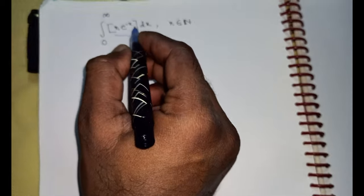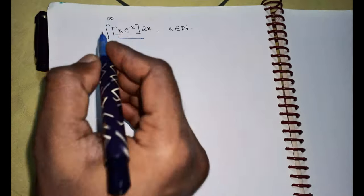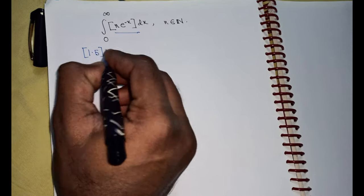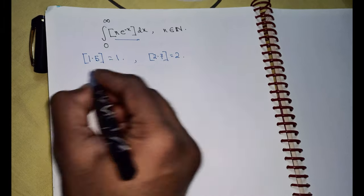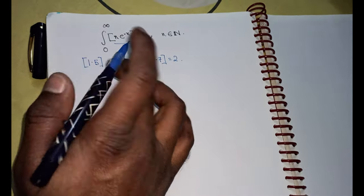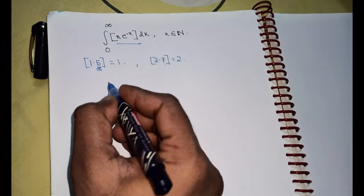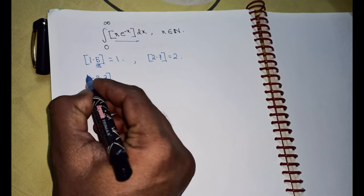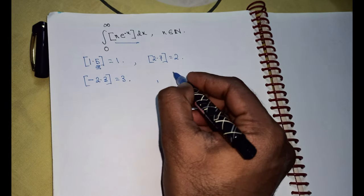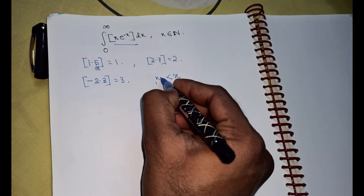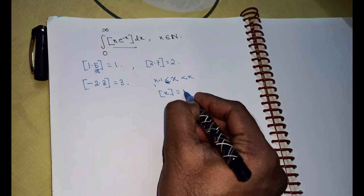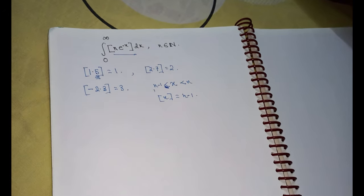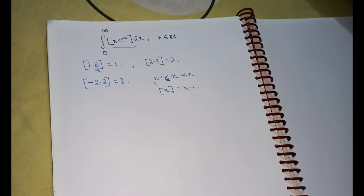First, for those who have some problem with the greatest integer function, let me explain what it is. If 1.5 is under the greatest integer function box, then the output will be 1. If it is 2.7, then the output will be 2. So for positive numbers, you can think that the greatest integer function drops the decimal part. The general rule is: if x lies between n minus 1 and n, then the box of x equals n minus 1 — that is, the greatest integer less than or equal to it.